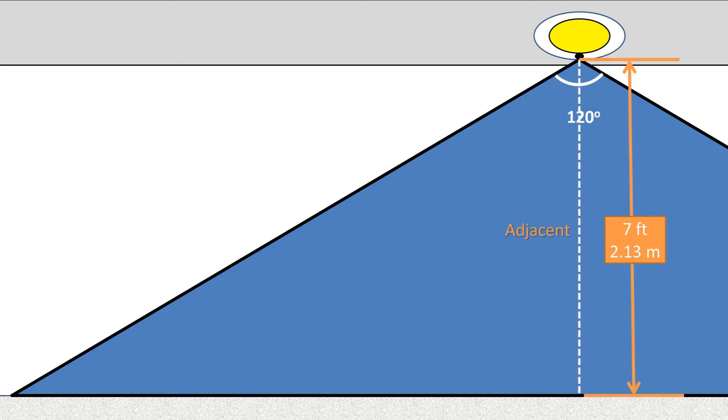We position the light at 7 feet or 2.13 meters above the ground. We want to find how far away the light will detect motion. How do we solve this problem?